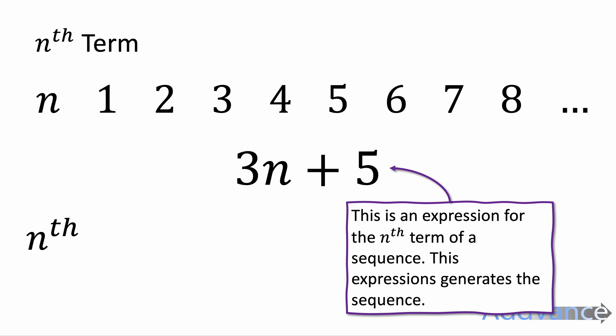So for example, if n is one, that's the first position of the sequence. If n is two, that's the second position. If n is seven, that's the seventh position of the sequence.